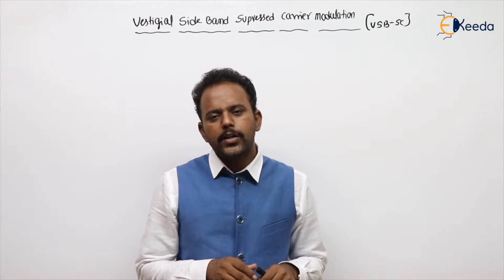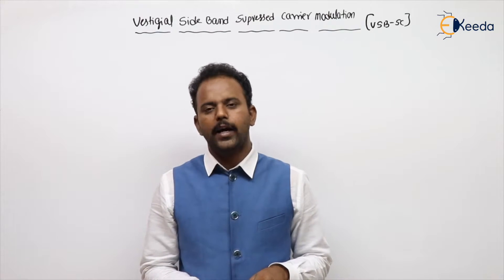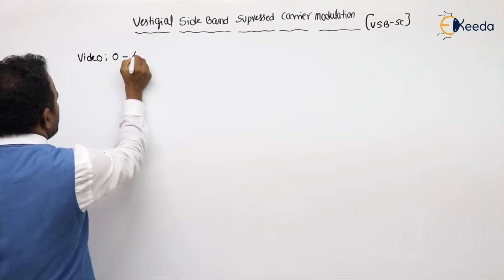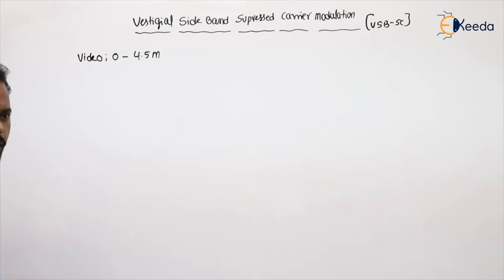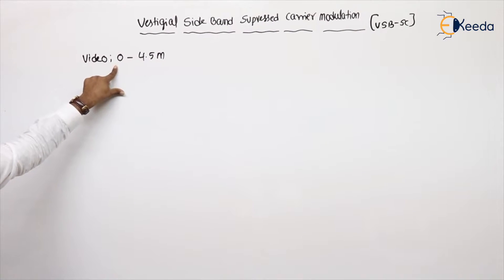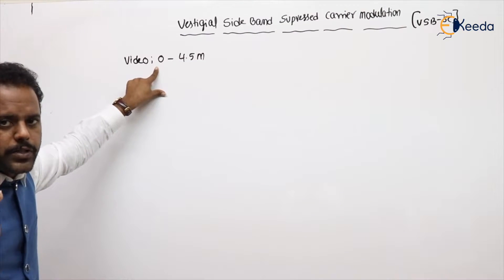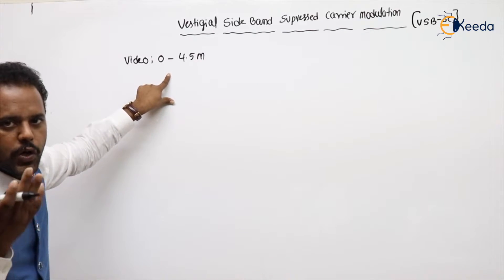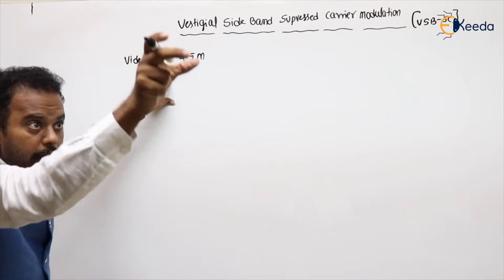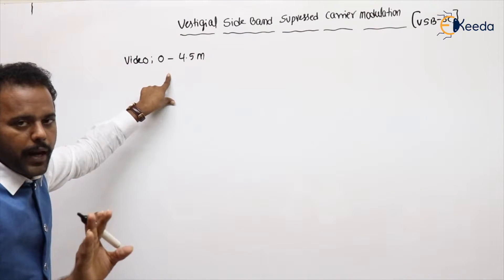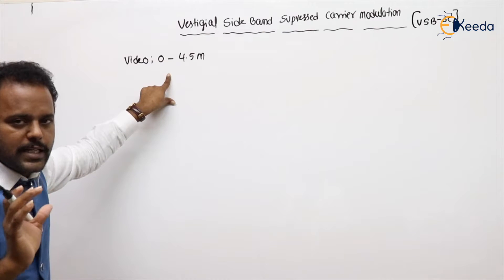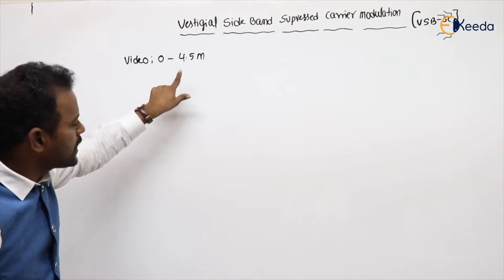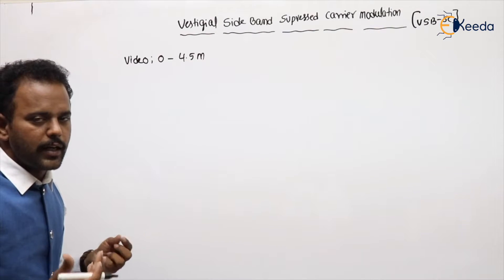Coming to the video signals — video signals have frequencies from 0 to 4.5 MHz. We cannot generate video signals using SSBSC modulation. Why? Because of practical filter difficulty — with 0 to 4.5 MHz, there is no gap between the upper and lower sidebands. We need ideal filters with exact sharp cutoff frequency, which is practically not possible. By using SSBSC, we can transmit only voice, and even for video there is no gap at all — ideal filters are needed, which is practically not possible.